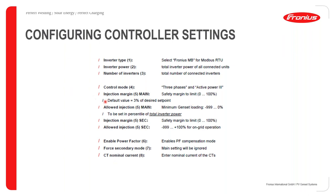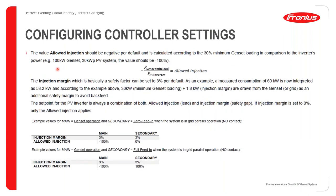Further down in the UI you will find injection margin and allowed injection settings. The injection margin is a safety margin — for example, setting it to 3% means 3% of the measured consumption value will always be drawn from the grid or genset, even with sufficient PV production. The allowed injection is based on the formula: negative of (minimum genset power divided by total PV inverter power), and this value differs system by system.